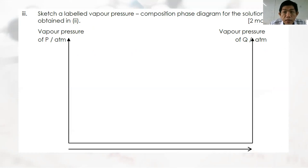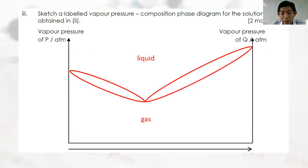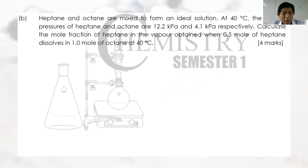Question 3b: If Q is water, give an example of liquid P. Acid-water mixtures give negative deviation due to stronger intermolecular forces. So P can be any acid, such as hydrochloric acid or nitric acid. Question 3c: Sketch a labeled vapor pressure composition curve showing negative deviation. Everything above the curve is liquid, everything below the curve is gas; label the curve and the azeotropic minimum.